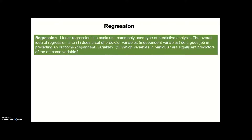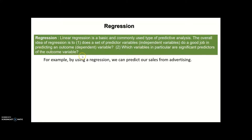Regression is a basic and commonly used type of predictive analysis. The overall idea of regression is to examine whether a set of predictor variables, or independent variables, do a good job in predicting an outcome or dependent variable. The second purpose of regression analysis is to figure out which variables in particular are significant predictors of the outcome variable.